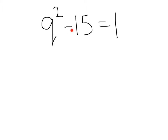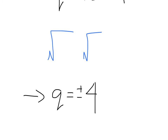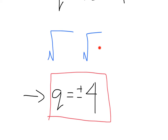Let's try this one: q squared minus 15 equals 1. First, get the q squared term by itself — add 15 to both sides, giving us q squared equals 16. Next, take the square root of each side of the equation, and that gives us q equals positive or negative 4. The square root of 16 is 4, and we've got our plus and minus option.